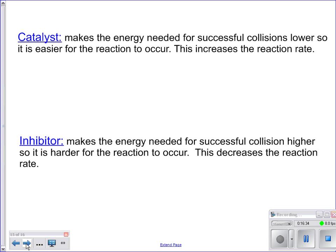And then the last couple things that we've got. A catalyst, we're going to spend time talking about this more tomorrow. But just to give you an idea, what a catalyst does is it makes the energy needed for successful collisions lower so that it is easier for the reaction to occur. This increases the reaction rate. So we're going to see that, well, let's just first say, I'm just summarizing, it speeds up reaction.